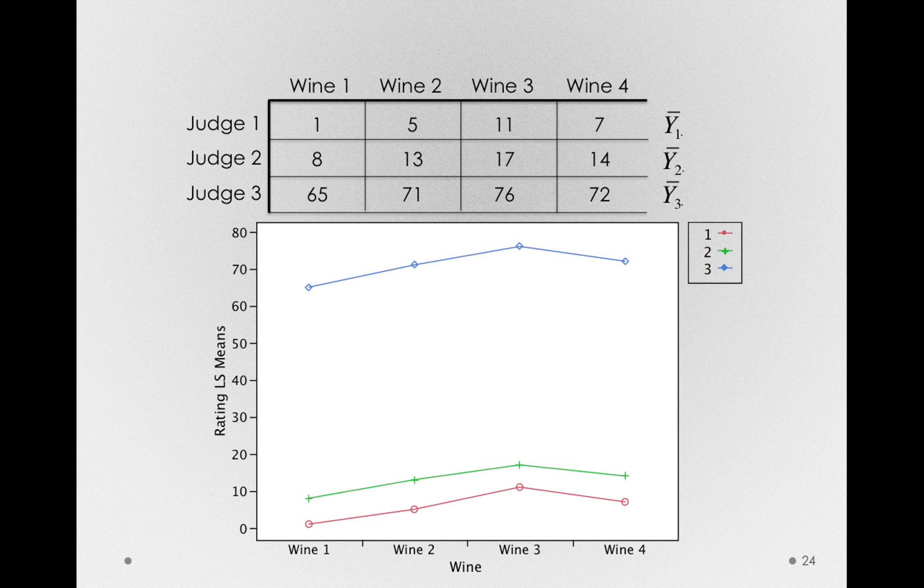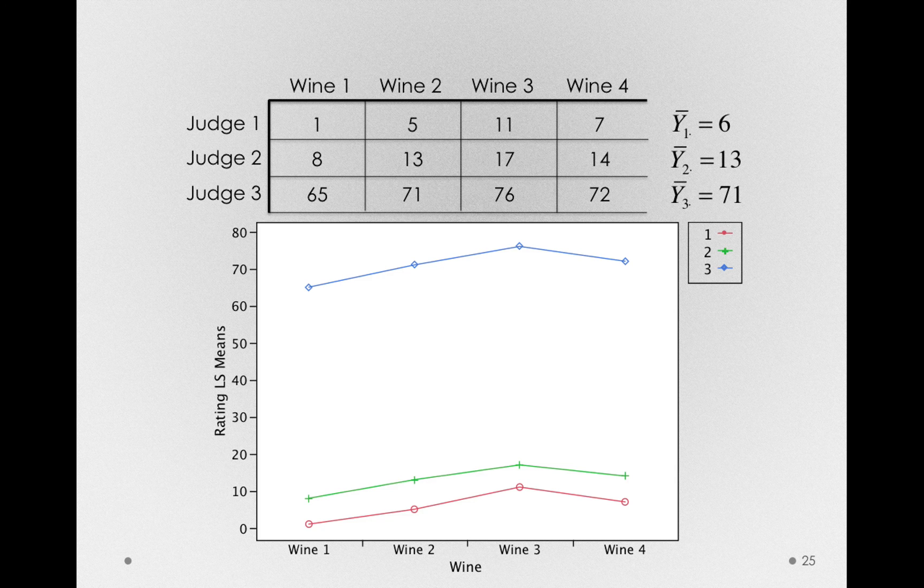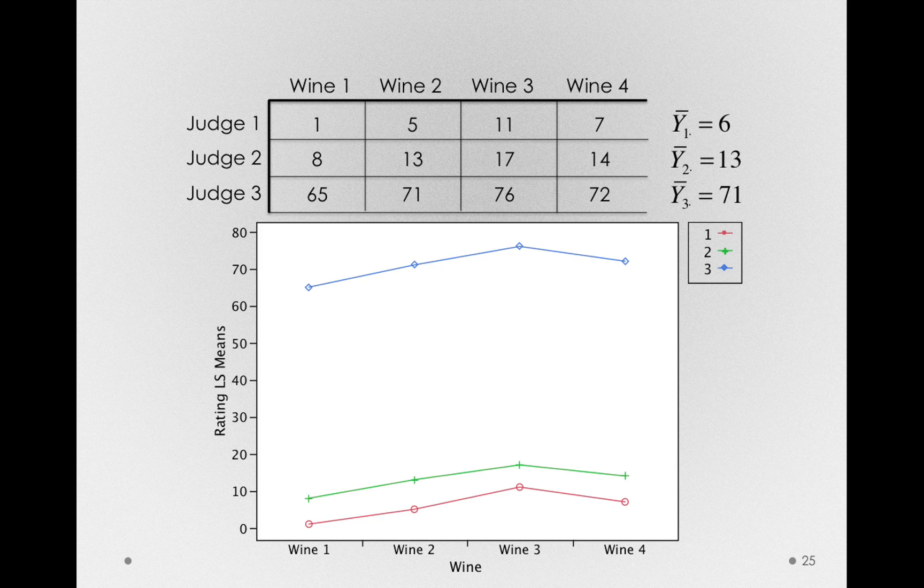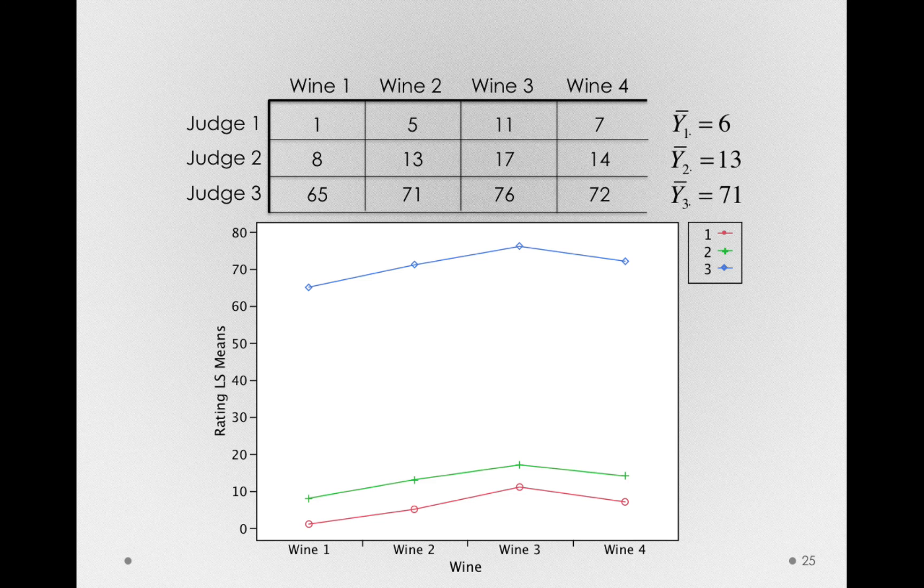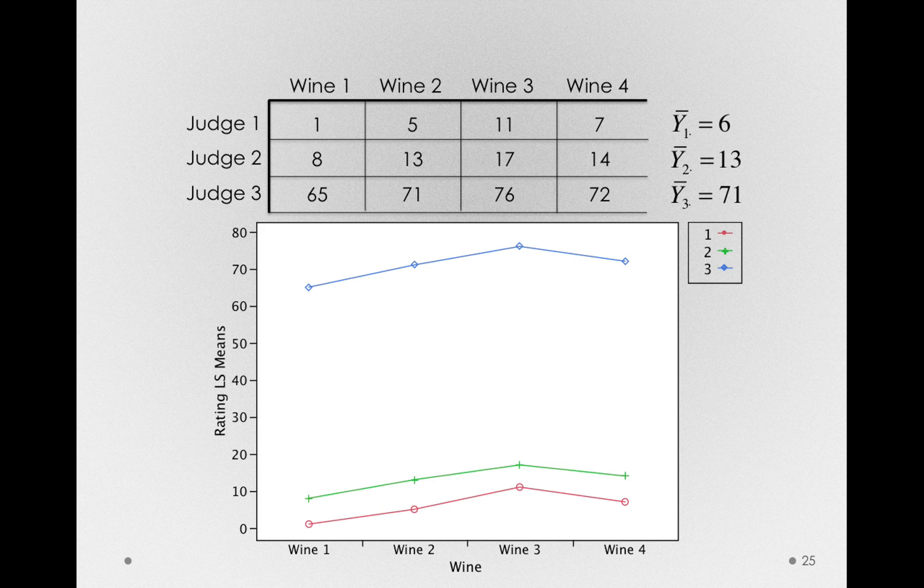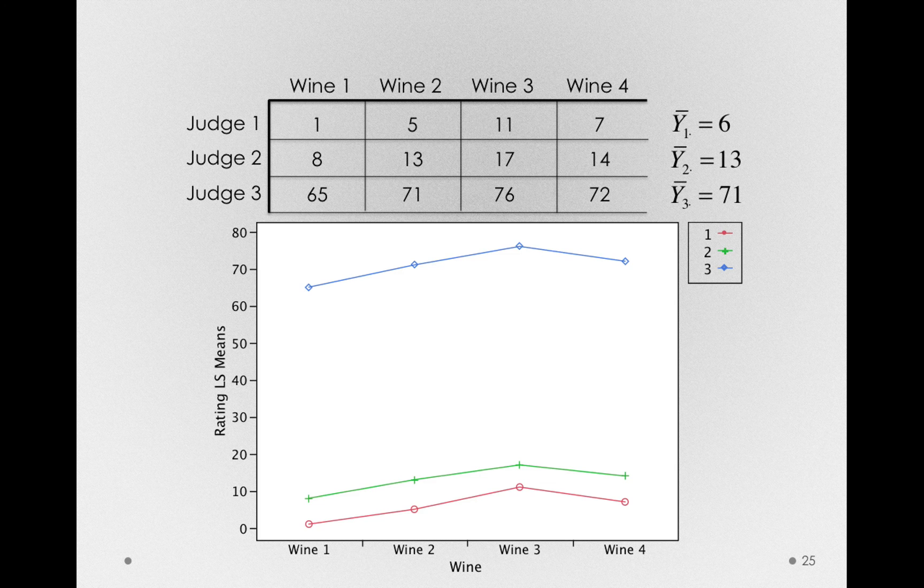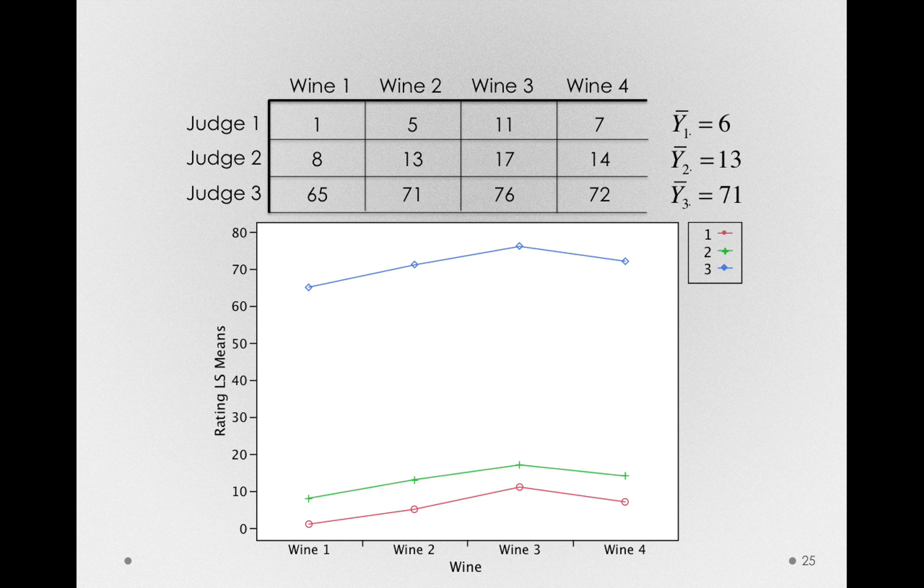Let me add in one more piece: the actual averages for each of our judges. On average, judge one, who gave very low ratings, had a mean of six; judge two had a mean of thirteen; and judge three had a mean of seventy-one. Notice that these judges differed considerably from each other in their set points for making ratings. Judge one simply gave very low ratings on average, and so did judge two, and judge three gave very high ratings on average. Let's see how we can use this information to pull out some of the variability in these measurements.